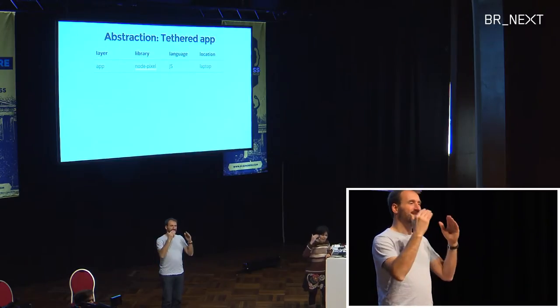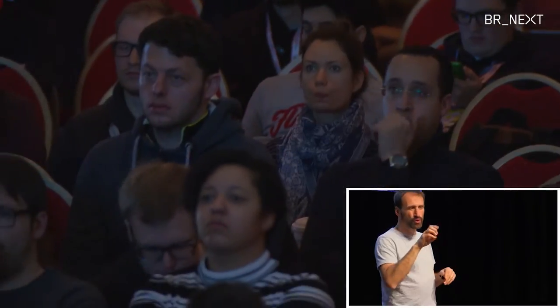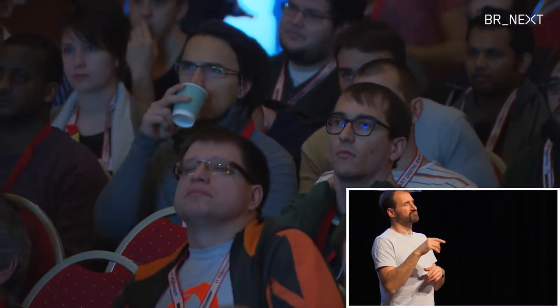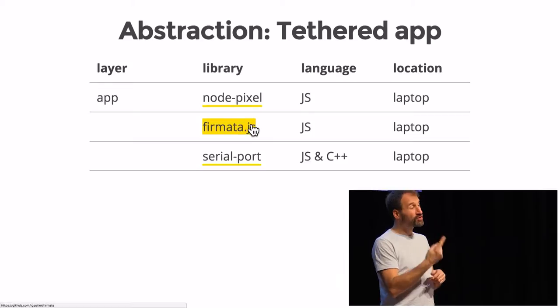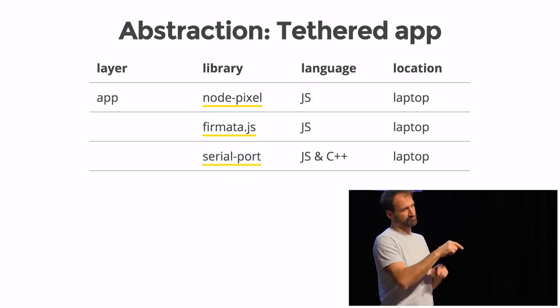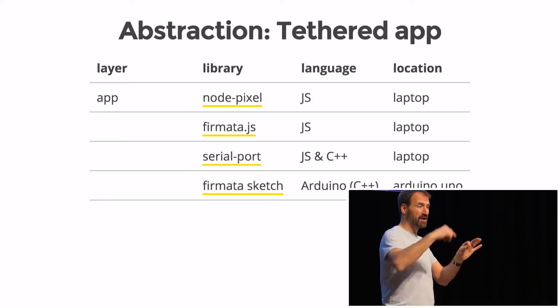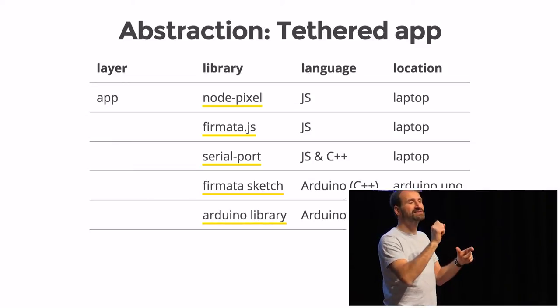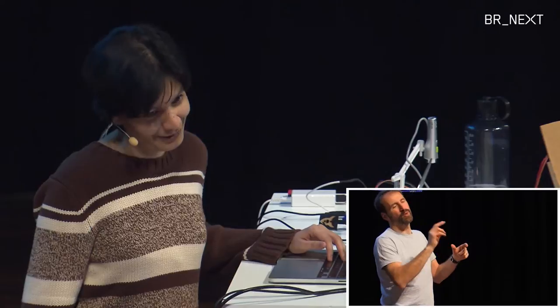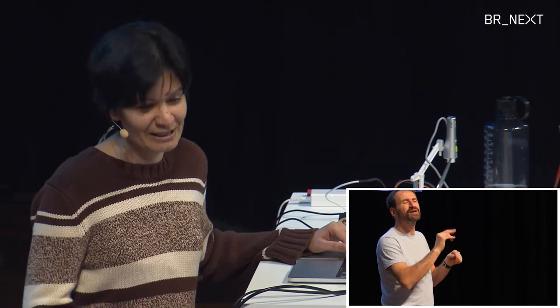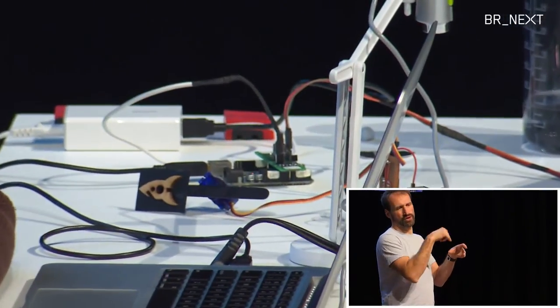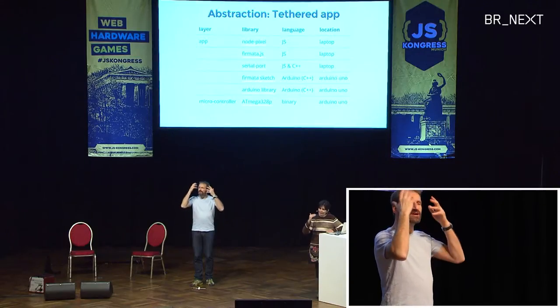Starting with the top app layer, which runs NodePixel — a Node library using JavaScript — on my laptop. NodePixel's package.json includes Firmata.js, the protocol for communicating with microcontrollers. Firmata.js has a dependency on the serial port library, written in JavaScript and C++. From there, it connects via USB cable to my Arduino board, where the Firmata sketch runs — written in Arduino, a flavor of C/C++. The Firmata sketch talks to the Arduino library, and ultimately it's bare-metal machine code running on the Atmega328 microcontroller.